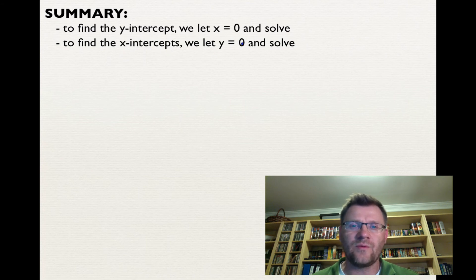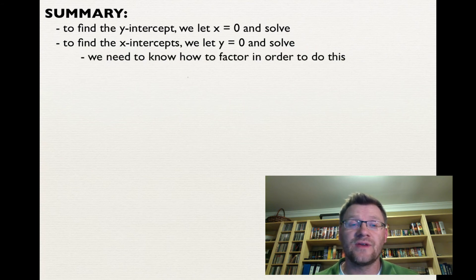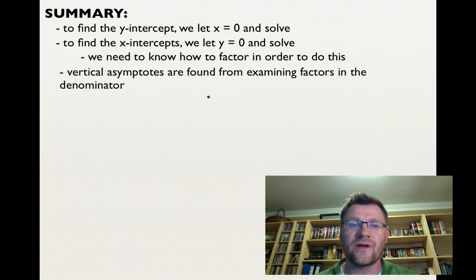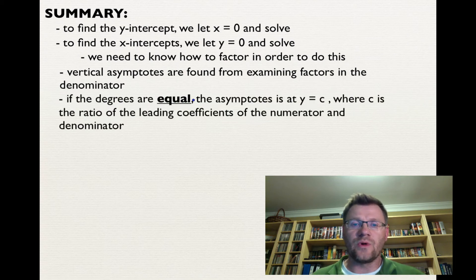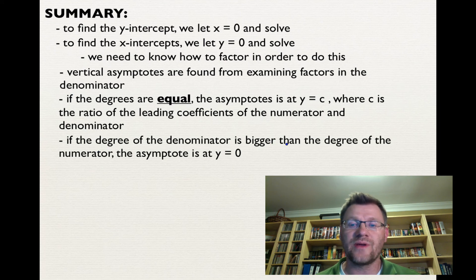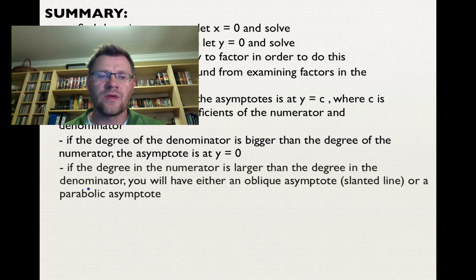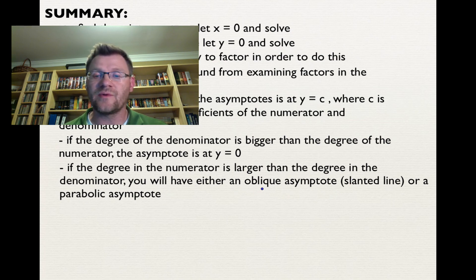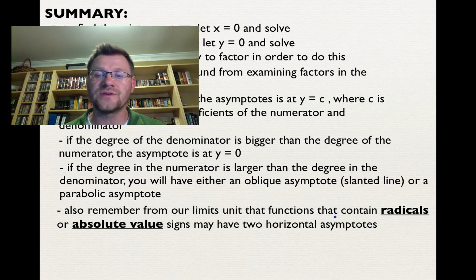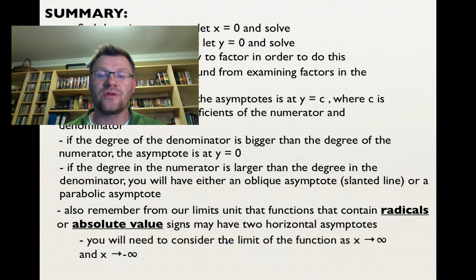In summary: to find the y-intercept, let x = 0 and solve; to find x-intercepts, let y = 0 and solve — you need to know how to factor. Vertical asymptotes come from factors in the denominator. If degrees are equal, the horizontal asymptote is at y = c, the ratio of leading coefficients. If the denominator's degree is bigger, the horizontal asymptote is y = 0. If the numerator's degree is larger, you'll have an oblique asymptote (degrees differ by one) or a parabolic asymptote (degrees differ by two). Functions with radicals or absolute values may have two horizontal asymptotes. Your assignment today is on pages 252 to 253.